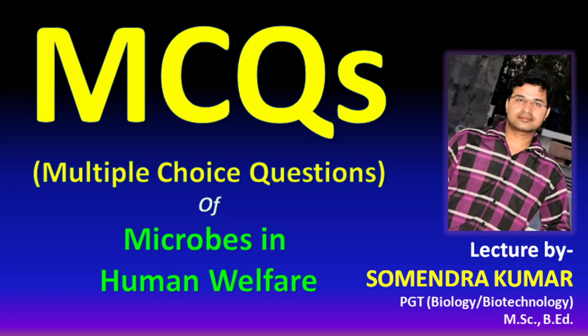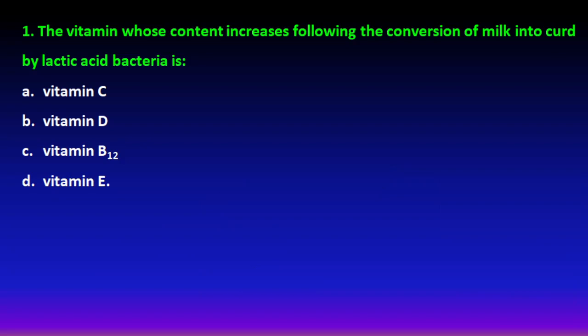Hello everyone, this video is about multiple choice questions from the chapter 'Microbes in Human Welfare.' First question: which vitamin's content increases when milk is converted to curd with the help of lactic acid bacteria? The answer is Vitamin B12, so the right answer is option C.